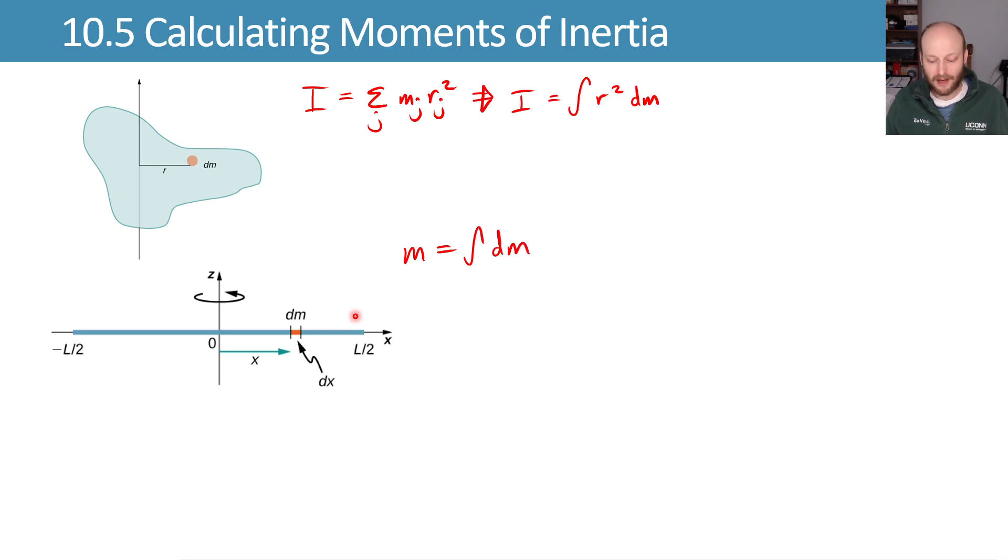If I want to know the mass of this object, I can define my little bit of mass dm, and then I add up all those little bits of mass to get my overall mass. If my overall mass is m, then integral of dm gives us m.